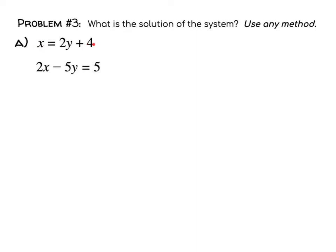This right here says x equals 2y plus 4. That makes it really easy to substitute in 2y plus 4 for x because it's already solved for. So I'm going to take 2x minus 5y equals 5 and where I see x, we're going to put in what x is equal to, 2y plus 4. So two times parentheses 2y plus 4 minus 5y equals 5.